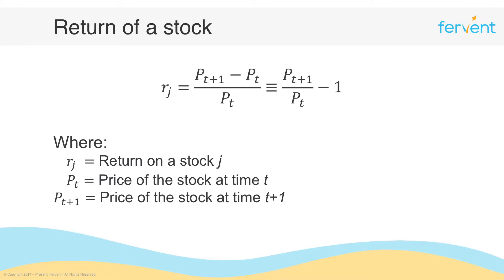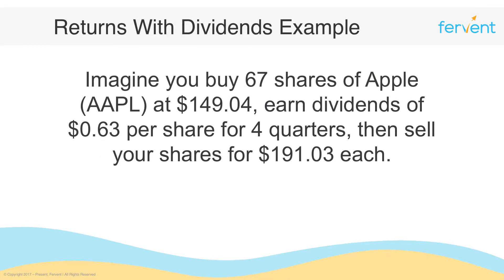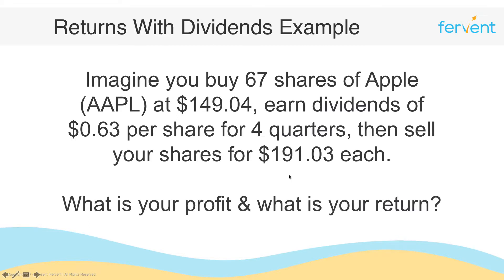Let's step it up a notch and consider an example with dividends. Imagine you buy 67 shares of Apple Inc. at $149.04. You earn dividends of $0.63 per share for four quarters and then sell your shares for $191.03 each. What is your profit and what is your return? The number of shares is relevant for total profit but not for calculating the return. The purchase price is $149.04 and the selling price is $191.03.